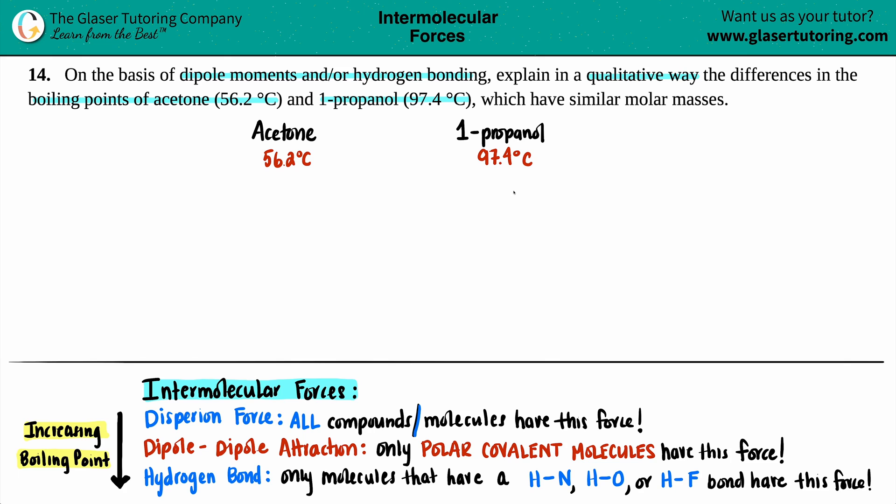And we basically have to explain in a qualitative way. Qualitative just means by words, by wording. No math here. So we're just talking about it by wording qualitatively, discussion about why the boiling points are so different when they both have very similar molar masses. Now, the easiest way to go about this question is to actually look at what acetone and 1-propanol look like. So what I will do is I will supply the chemical formula for acetone and propanol, and then we can draw a Lewis structure and see what's actually going on.